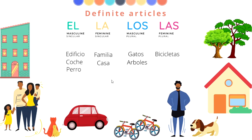We have two feminine singular nouns here, and for that we use the definite article la. Por ejemplo, la familia, la casa. Muy bien. Now let's see some definite articles — masculine plural: los gatos, los árboles. Muy bien.